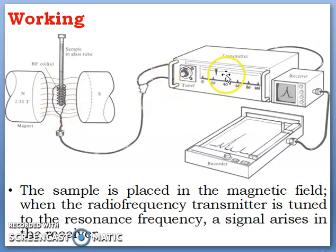This is the transmitter through which radio frequency radiation is transmitted to the sample holder. After the absorption, the radio frequency receiver will receive the signal, and it is sent to the recorder which records it in the form of a spectrum.